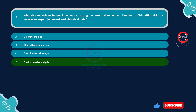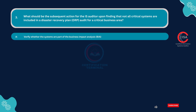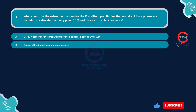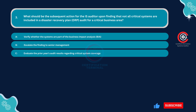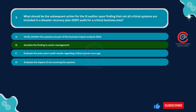Question number three: What should be the subsequent action for the IS auditor upon finding that not all critical systems are included in a disaster recovery plan audit for a critical business area? Option A: Verify whether the systems are part of the business impact analysis. Option B: Escalate the finding to senior management. Option C: Evaluate the prior year's audit results regarding critical system coverage. Option D: Evaluate the impact of not covering the systems. The correct answer is Option B — escalate the finding to senior management.